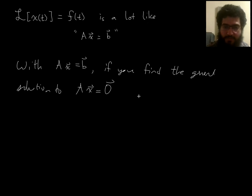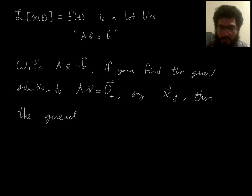where I put zero here instead of B, say it's X sub G, then there is a way to get a general solution to the original non-homogeneous. If you just find a general solution to the homogeneous, then to get a general solution to the original non-homogeneous,